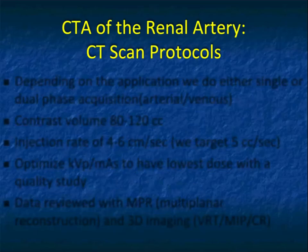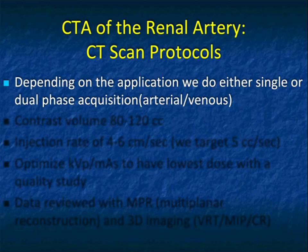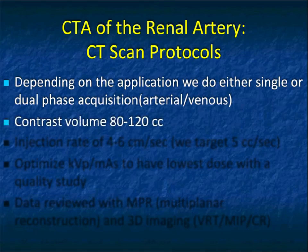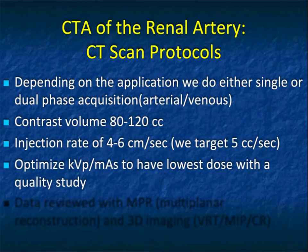The scan protocol will be dependent on the application. For renal artery stenosis, you'll get the kidneys alone, but you may also get a delayed phase to look for perfusion changes to determine the significance of the stenosis. For fibromuscular dysplasia, the requisition often extends from the carotids through the iliacs, requiring a longer scan distance and a larger amount of IV contrast. We typically do a 5cc per second injection rate and optimize KVP and MAS for the lowest dose while achieving a great quality study.